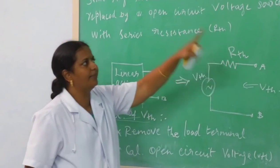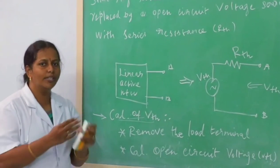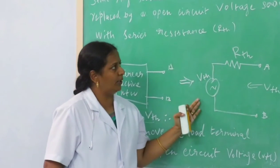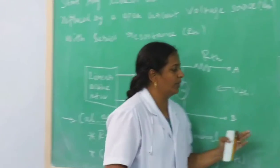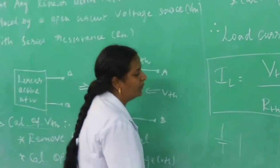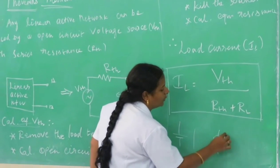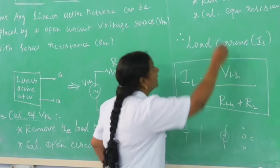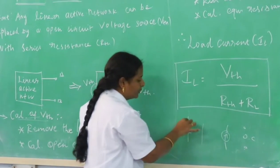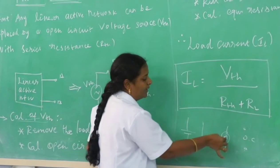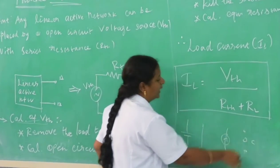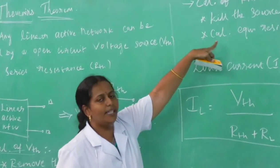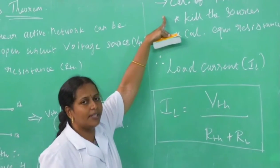The second step is calculation of Thevenin resistance. For calculation of Thevenin resistance, we have to kill the sources — kill the energy sources. If it is a voltage source, we have to short the circuit. If it is a current source, we have to open (remove) the terminal. Then we calculate the equivalent resistance, that is known as R Thevenin.